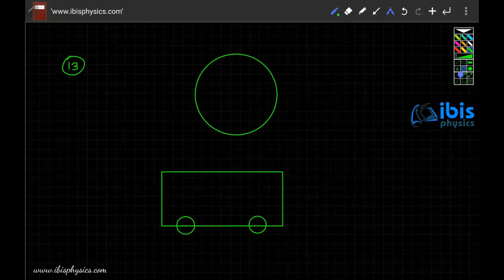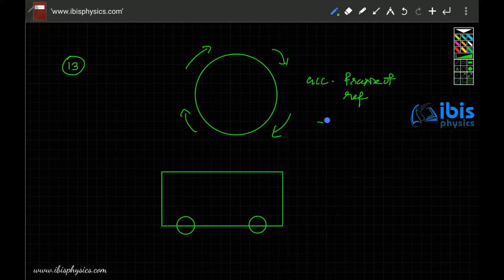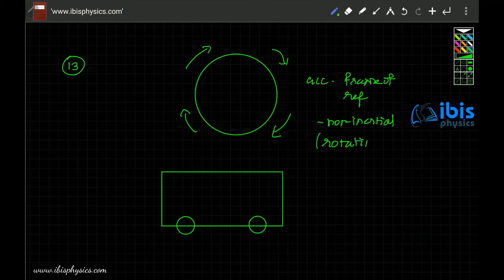When the platform is rotating with constant angular velocity, even though the speed is constant, because it is rotating there will be centripetal force. This is an example of an accelerating frame of reference, also called a non-inertial frame. A rotating frame is a non-inertial frame.